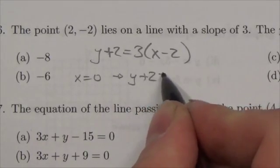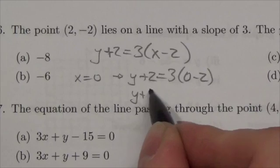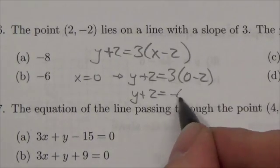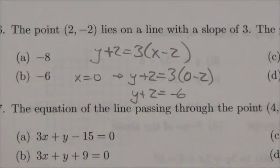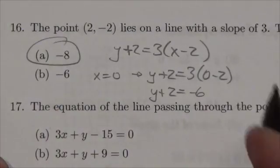y + 2 = 3(0 - 2). So y + 2 equals -2 times 3, which is -6. When I subtract 2 from both sides, I get -8, and that's the y-intercept.